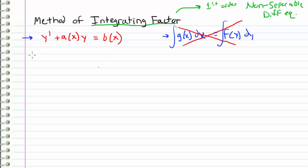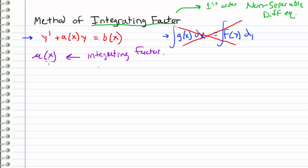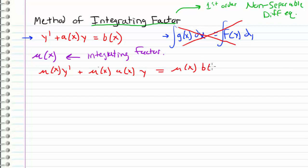We can define this integrating factor as a function of x, and we'll denote it as mu of x. What we want to do is multiply through our entire differential equation by this function mu of x. When I do that, what I get is mu of x times y prime plus mu of x times a of x times y, and this is equal to mu of x times b of x.